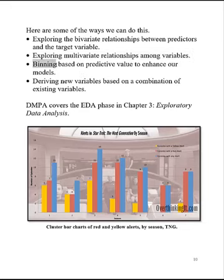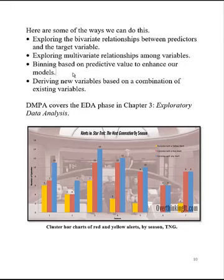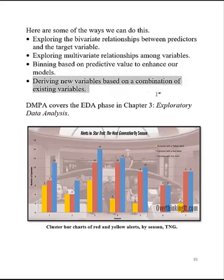Binning is a big deal — binning happens all the time, and in the real world binning is almost always done wrong. We're going to learn how to do it right — binning based on predictive value to enhance our models. If you're going to do binning, do it right. And then deriving new variables: interesting, powerful new variables hopefully based on combinations of your existing variables. All this and more is covered in chapter 3, EDA, in DMPA.